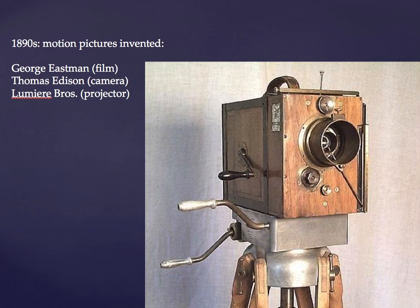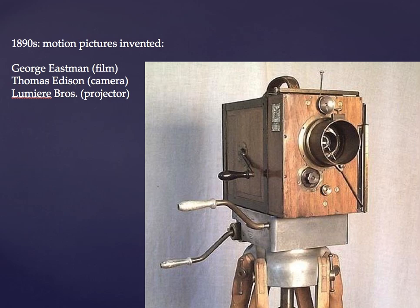The Lumière brothers thought it would be nicer to project these moving pictures in a theater — a concept going back at least 2,500 years to the Greeks. That was a good move: instead of watching movies individually, people watched them in groups, at least until home video and streaming. Those three groups — Eastman, Edison, and the Lumières — together brought us motion pictures, and by around 1895, right in the middle of that decade, movies were available to be shown in theaters.